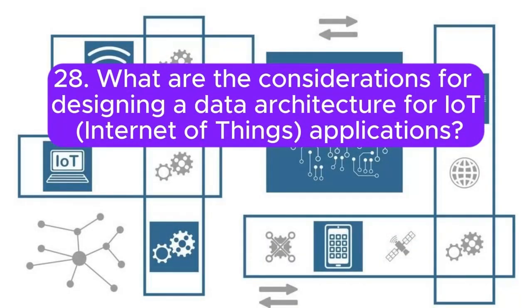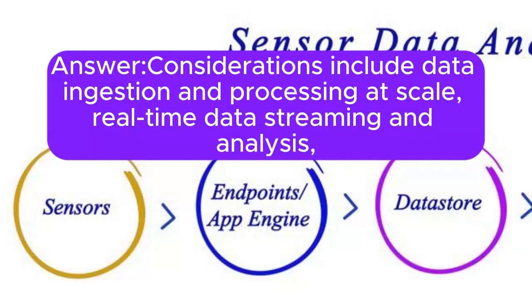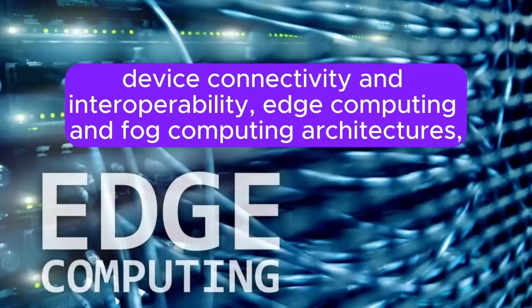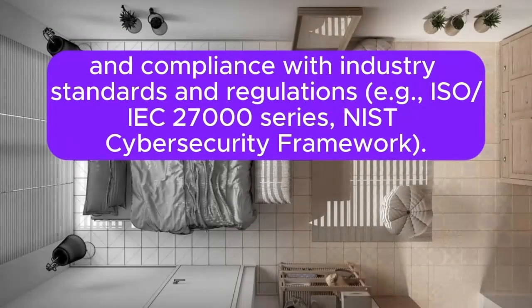Question 28: What are the considerations for designing a data architecture for IoT (Internet of Things) applications? Considerations include data ingestion and processing at scale, real-time data streaming and analysis, device connectivity and interoperability, edge computing and fog computing architectures, security and privacy of sensor data, data latency and bandwidth constraints, data integration with existing systems and workflows, and compliance with industry standards and regulations such as the ISO/IEC 27000 series.